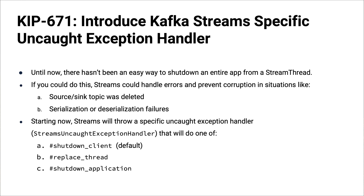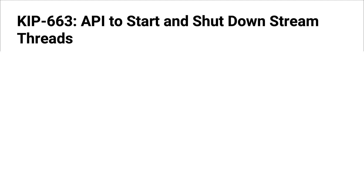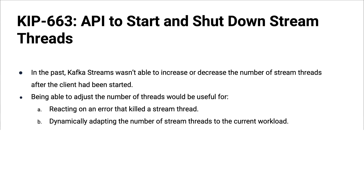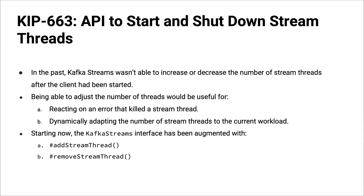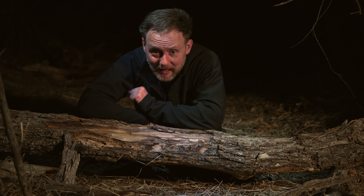KIP-663: An API to start and stop threads. When a Streams application starts up it has a configurable number of threads, and they can die without coming back. You might want to increase threads to handle a higher workload or take advantage of available cores. Now there's an API where you can at runtime add or remove threads without bouncing the application — pretty handy for manageability of a Streams app.